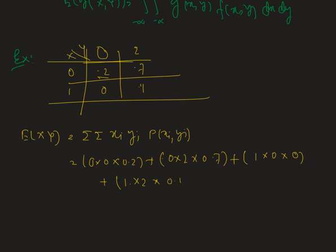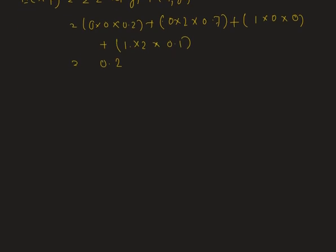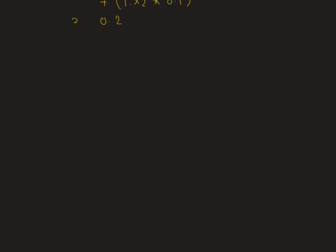Therefore all together it results in 0.2, so 0.2 is the expectation of XY. Now we are going to discuss some theorems regarding the expectation of bivariate random variables.